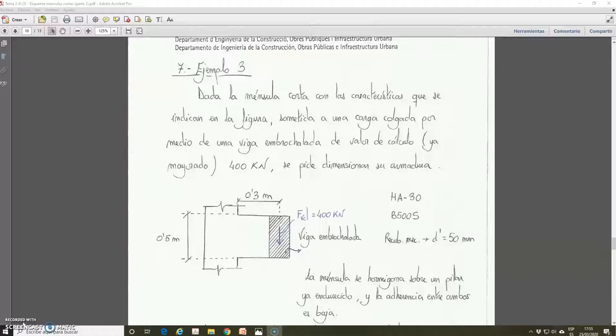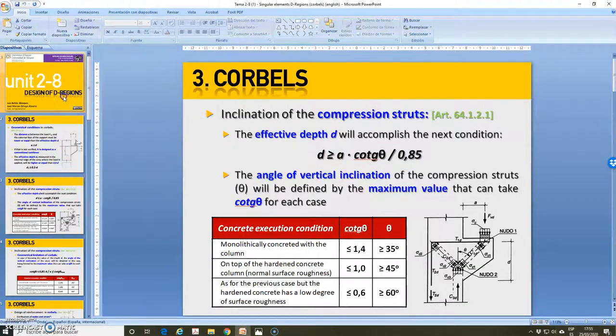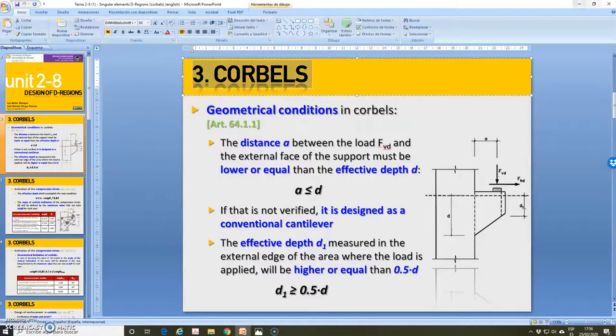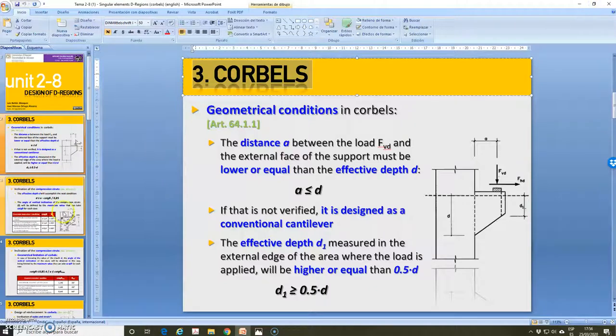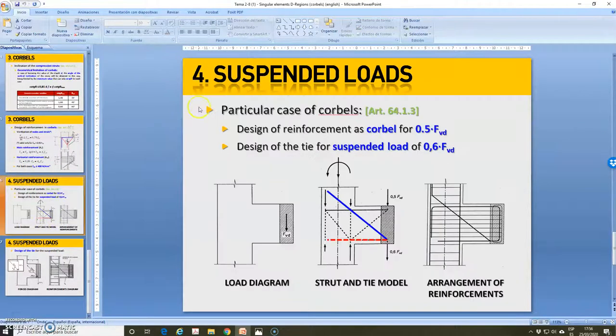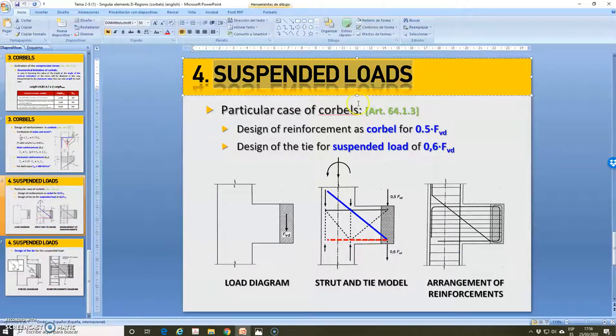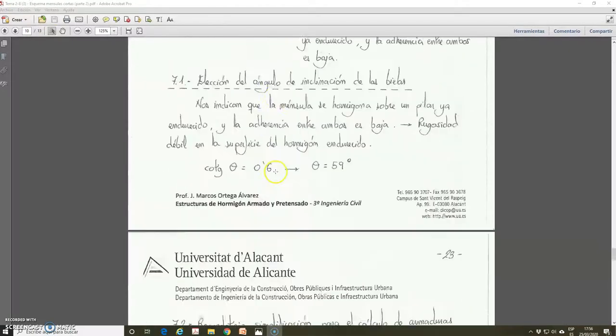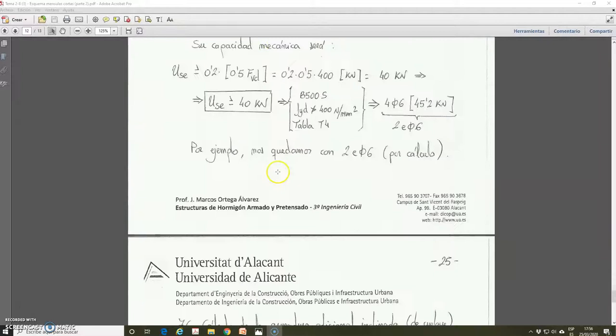This video is the last one of a series in which I have been explaining Unit 2.8 of the subject, dedicated to the design of D-regions in general and to the design of corbels particularly. We were doing in the previous tutorial an exercise, an example of the design of corbels with suspended loads. This example was exercise 3, or example 3, from the document Unit 2.8, which you have available in the materials of the subject.